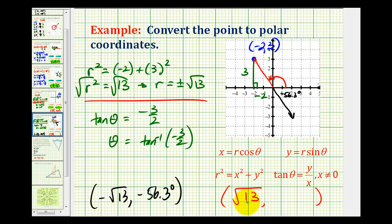But if we need a positive value for r, we can still use this information to determine r and theta. This tells us that our reference angle in the second quadrant would be 56.3 degrees. So 180 minus 56.3 degrees would give us our angle theta, and that would be 123.7 degrees.